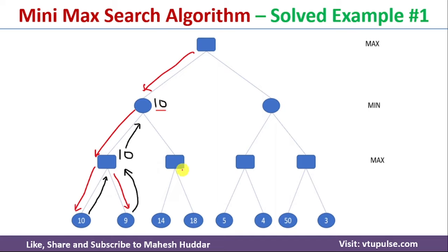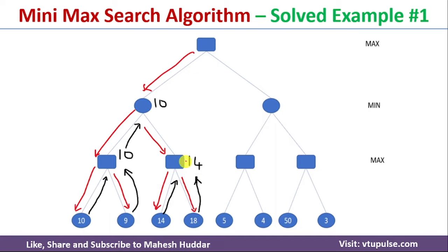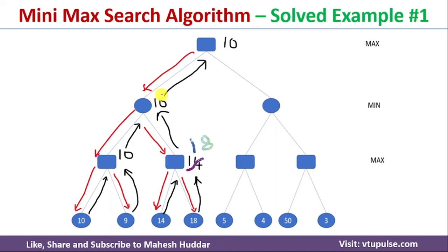That Min node also has a right subtree, so we expand it. Going left, we reach leaf node 14 and back it up to its Max parent — assigning 14. We then expand the right side, reaching leaf node 18. Between 14 and 18, the maximum is 18, so we update that Max node to 18. Sending 18 back up to the Min node: the current value is 10 and the new value is 18; the minimum is 10, so 10 is retained. Sending 10 back to the root node gives the root a current value of 10.